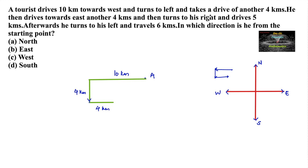And then he turns to his right. When he is facing the east direction, taking a right turn means he is moving towards the south. He moves south and drives 5 km.